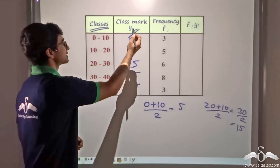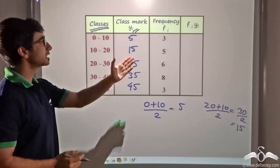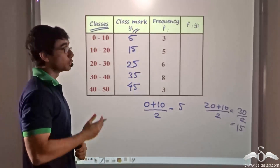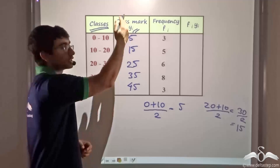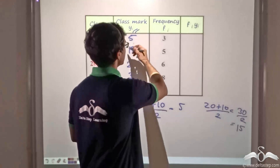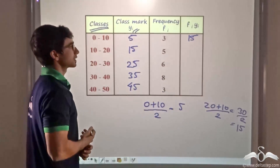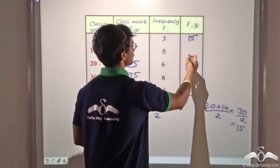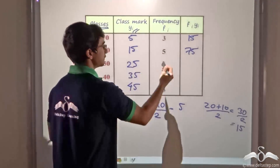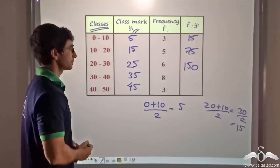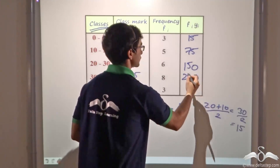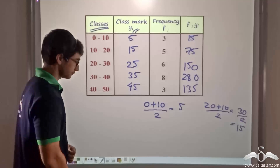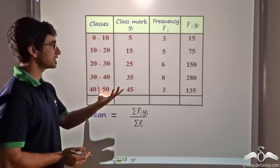Each occurrence is y1, y2, y3, and so on, and we have the frequency column. Now we simply multiply Yi with Fi — that is, we multiply each class mark with its corresponding frequency. So five multiplied by three gives fifteen. Fifteen into five gives seventy-five. Twenty-five into six gives one hundred and fifty. Thirty-five into eight gives two hundred and eighty. Forty-five into three gives a hundred and thirty-five.